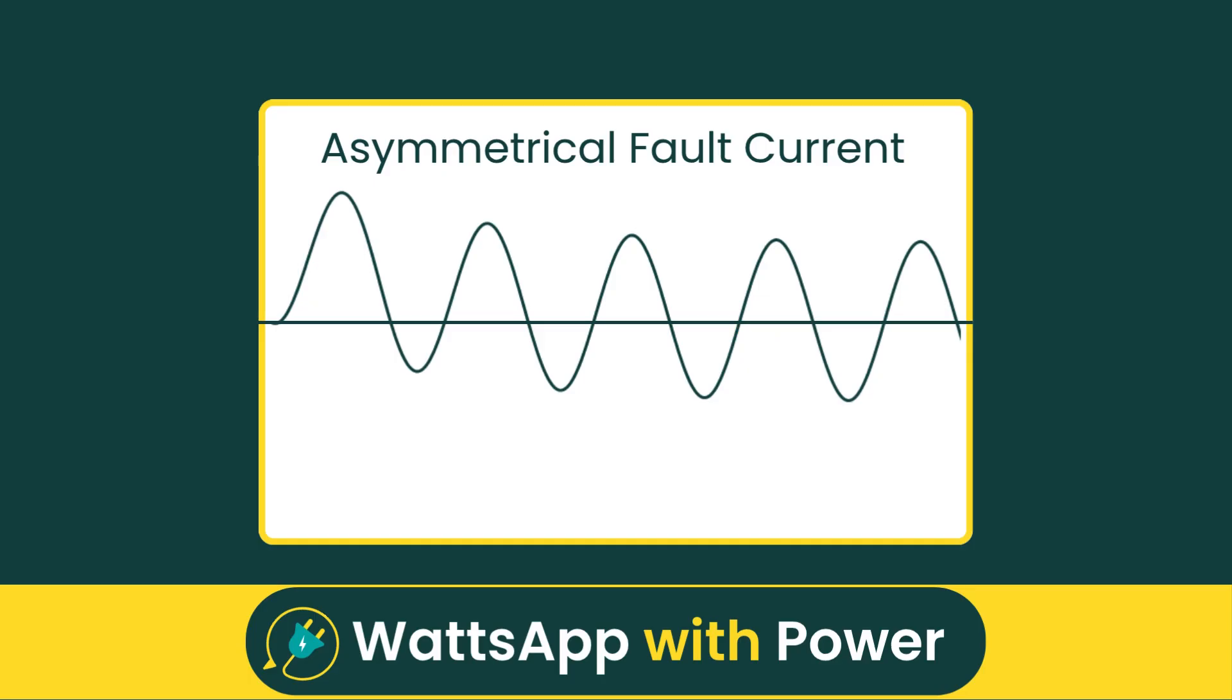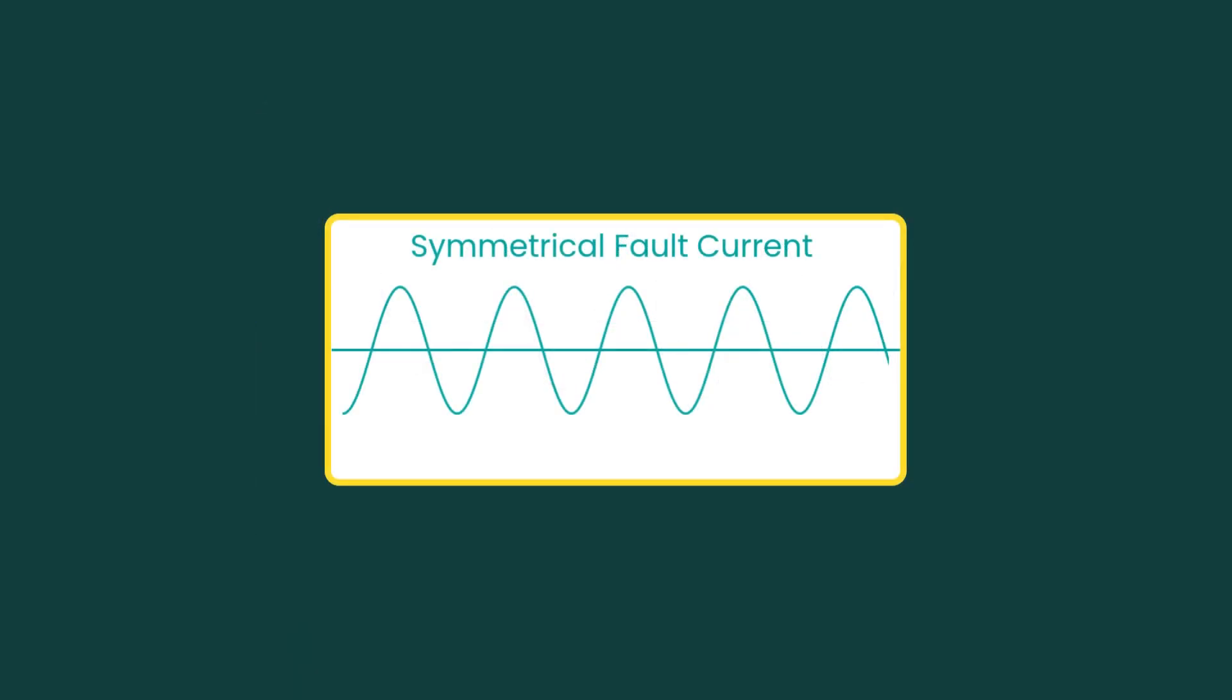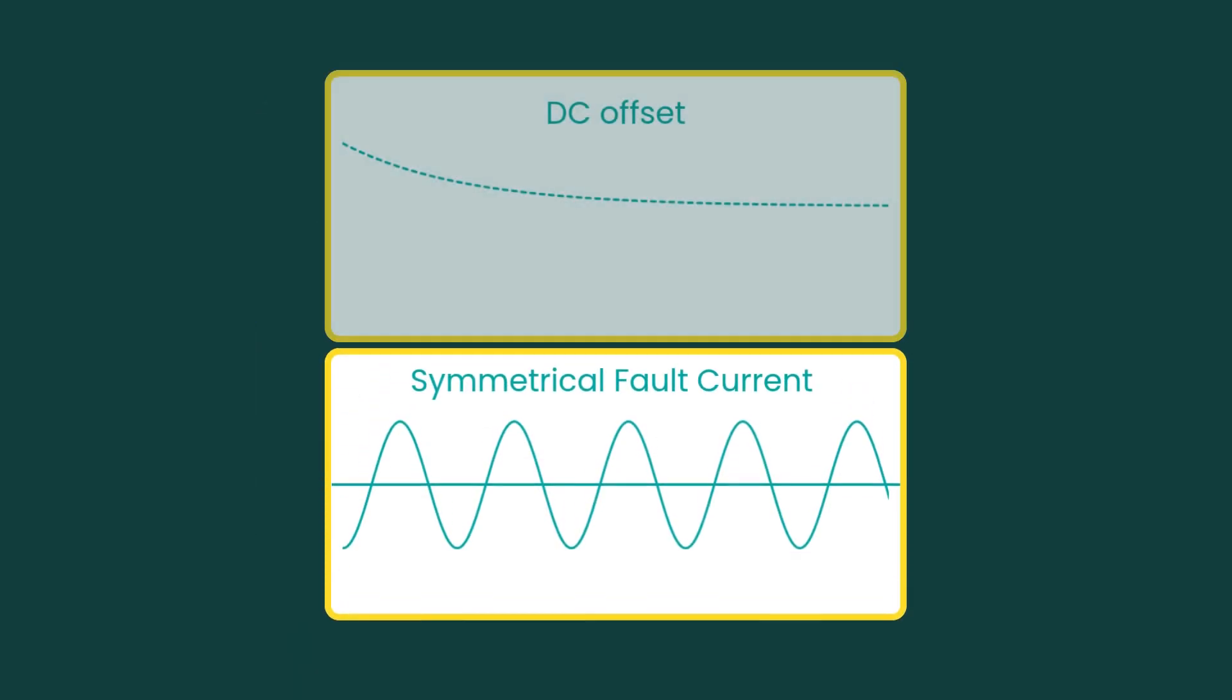That's because, during transient conditions, the fault current consists of two parts: symmetrical AC short-circuit current, and a DC offset superimposed on it.